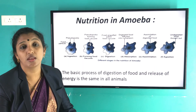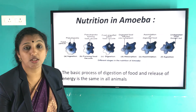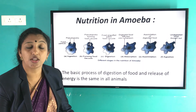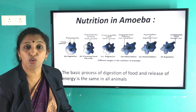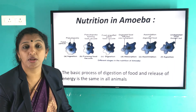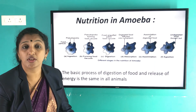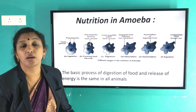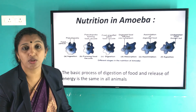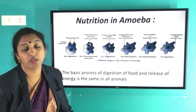To summarize: first, we discussed digestion in the stomach, then the small intestine's structure and function, then the large intestine which absorbs water. The last step in human digestion is egestion — the removal of undigested food from the alimentary canal through the anus. We also discussed nutrition in ruminants and amoeba. Thank you all.